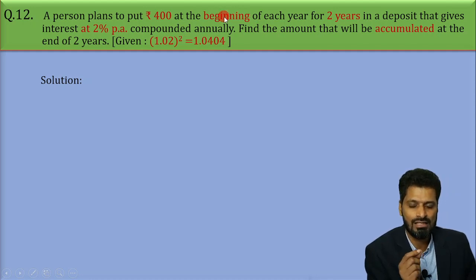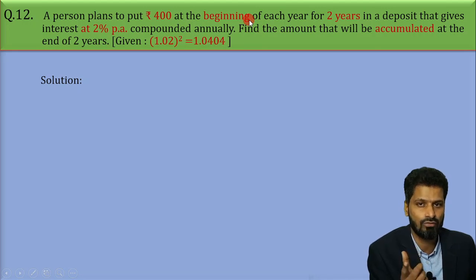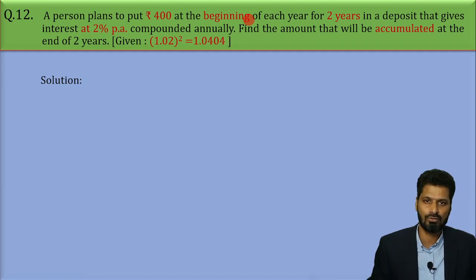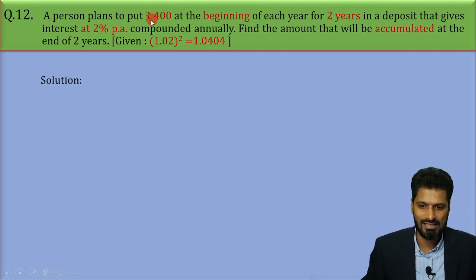So, whenever the annuity is put at the beginning, it means this is an annuity due. But since the annuity is put at the beginning of each year, it means this question is about annuity due. Is this clear everyone?